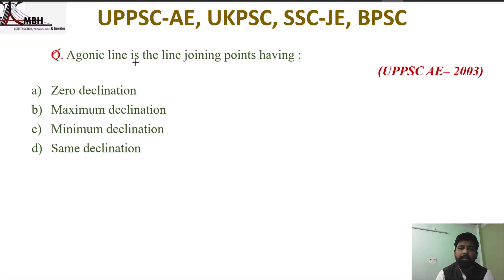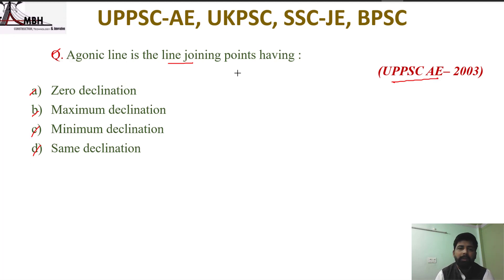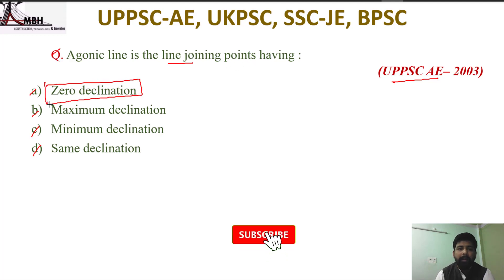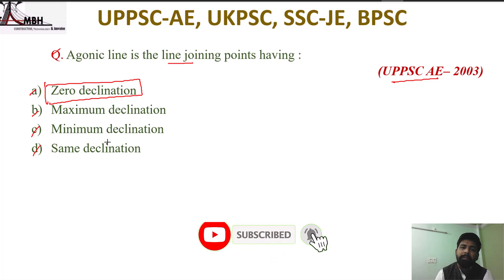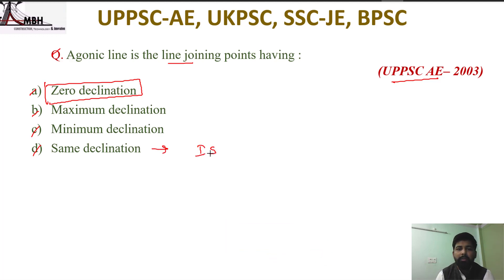Next question from UPSC 2003: the agonic line is the line joining points having — zero declination, maximum declination, medium declination, or same declination? The agonic line joins points of zero declination. The isogonic line joins points of same declination. Therefore option A is correct.